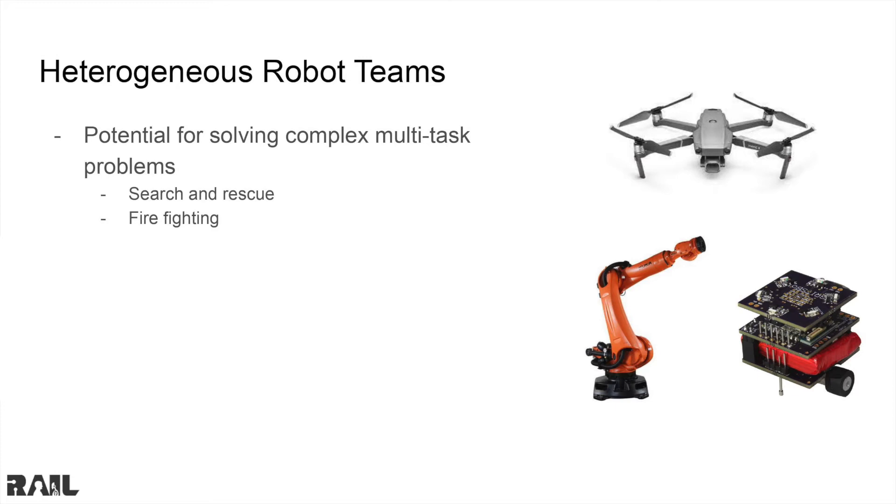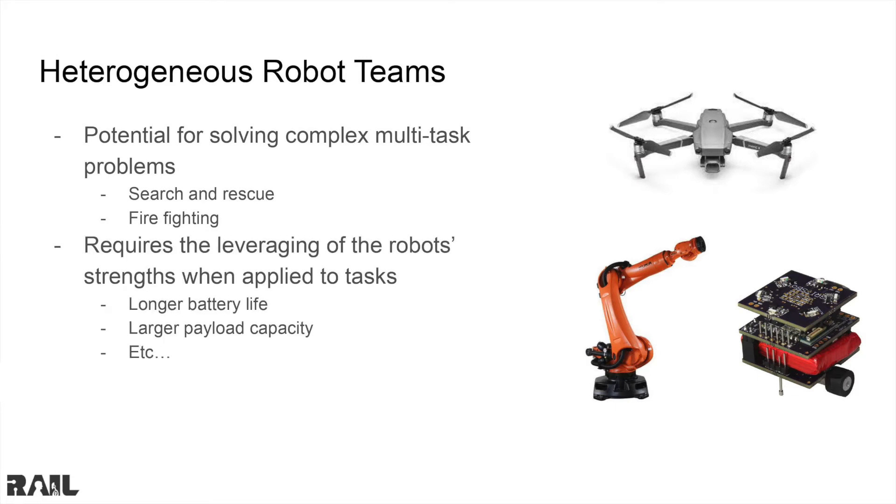Heterogeneous robot teams have the potential for solving complex multi-task problems such as search and rescue or firefighting. Efficiently solving these multi-task problems involves assigning robots to tasks such that their strengths are leveraged. For example, one task might be dousing a flame, which would require a certain amount of water to douse the flame. This problem of assigning robots to tasks efficiently is called the coalition formation problem.